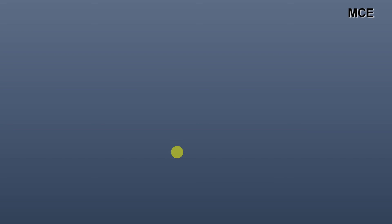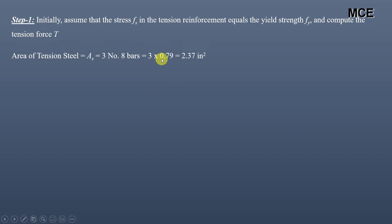The first step in finding the design moment strength is to assume that the stress in the tension reinforcement equals the yield strength, and after that you find the tension force. Our beam is reinforced with 3 number 8 bars. For 1 number 8 bar, the area of steel is equal to 0.79 in², so for 3 bars it will be 3 × 0.79 = 2.37 in².